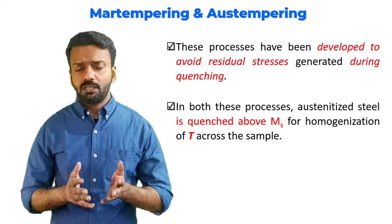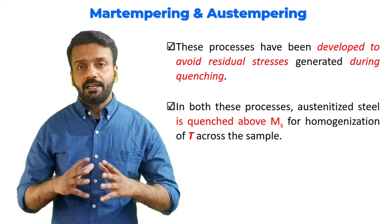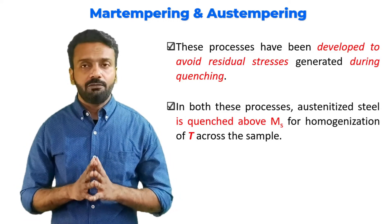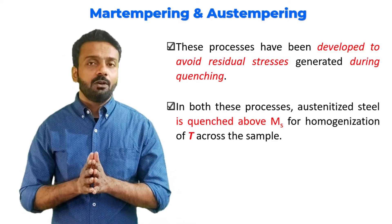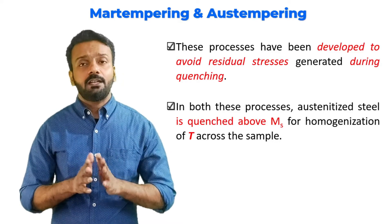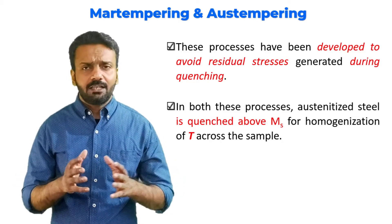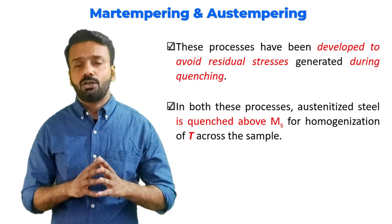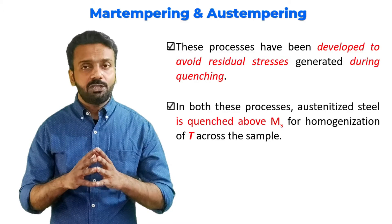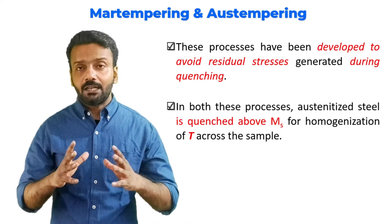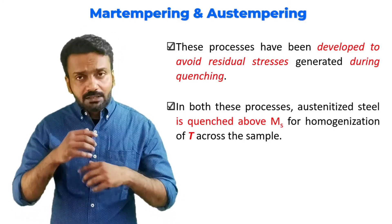In both these processes, we are quenching the material to just above the Ms (martensitic start) transformation temperature. In an earlier video on hardening, we saw that there are two different cooling rates for the internal and external surfaces of the material. Because of these two different cooling rates, when martensite forms, it is unstable — it will have a lot of distortion, cracking, and is not homogeneous.